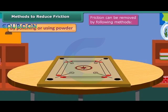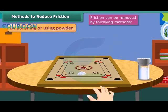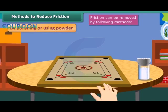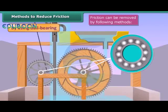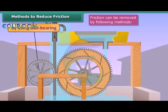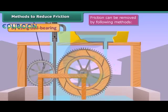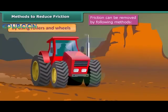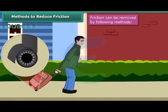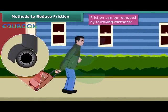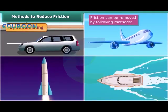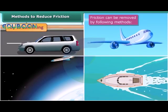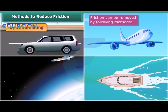Friction can be reduced by the following methods. By polishing or using powder, we can smooth rough surfaces and reduce friction. By using ball bearings — a hollow circular device containing small metal balls fitted around the moving part of a machine like an axle — sliding friction is converted into rolling friction. By using rollers and wheels, heavy objects like big suitcases are provided with small wheels to reduce friction. By streamlining, the bodies of cars, aeroplanes, rockets, boats and ships are shaped to reduce air and water friction.